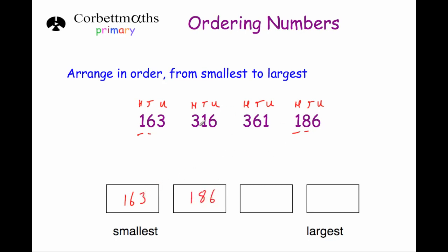Now looking at the other numbers, they both have threes in the hundreds column so they're both 300-something. Moving to the tens column, 316 has a one whereas 361 has a six, so 316 is smaller than 361. The final order is 163, 186, 316, 361.